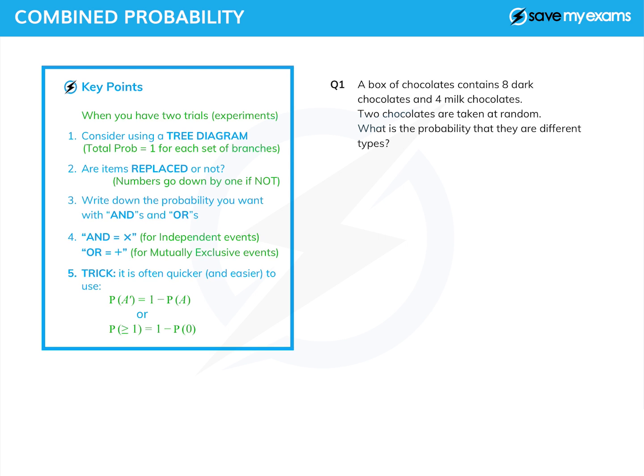And there is a trick you can use. It's often quicker and easier to use. If you want to find the probability that something doesn't happen, so the probability of NOT A, it's often easier to find the probability that it does happen and subtract it from 1. And similarly, if you want to find the probability that you get at least one of something, find the probability that you'd get none of that something, and subtract that from 1.